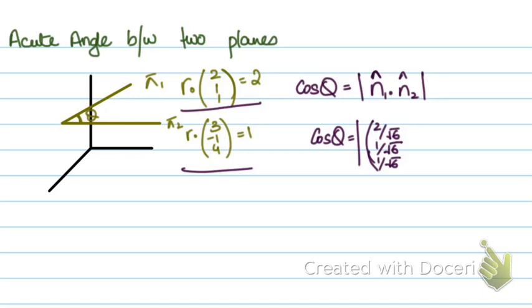This dot the unit vector of the second normal, which will be 3 over root 26, minus 1 over root 26, and 4 over root 26.